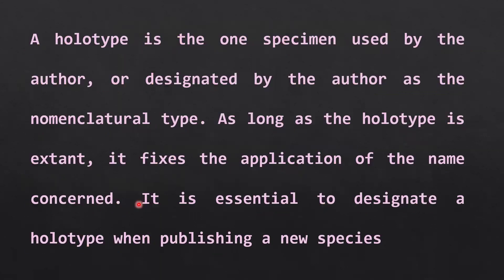Now we come to the individual types, starting with holotype. A holotype is the one specimen used by the author or designated by the author as the nomenclatural type. As long as the holotype is extant, it fixes the application of the name concerned. It is essential to designate a holotype when publishing a new species.